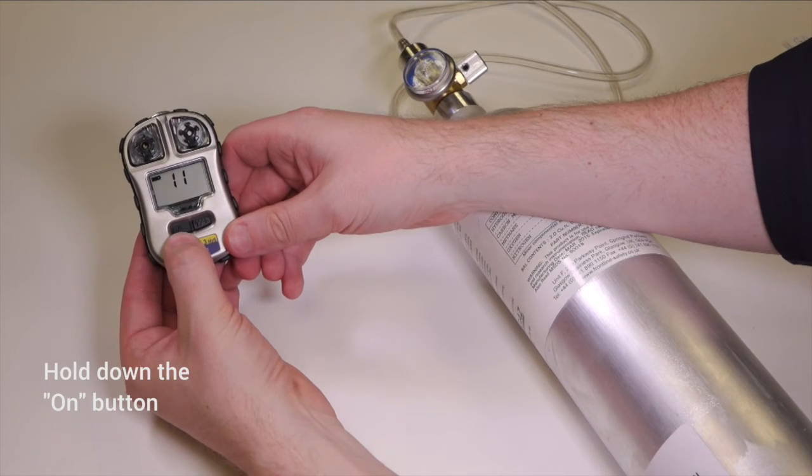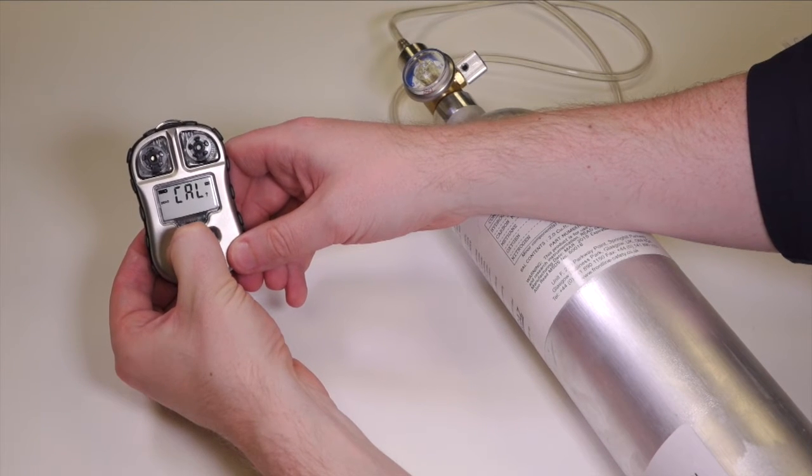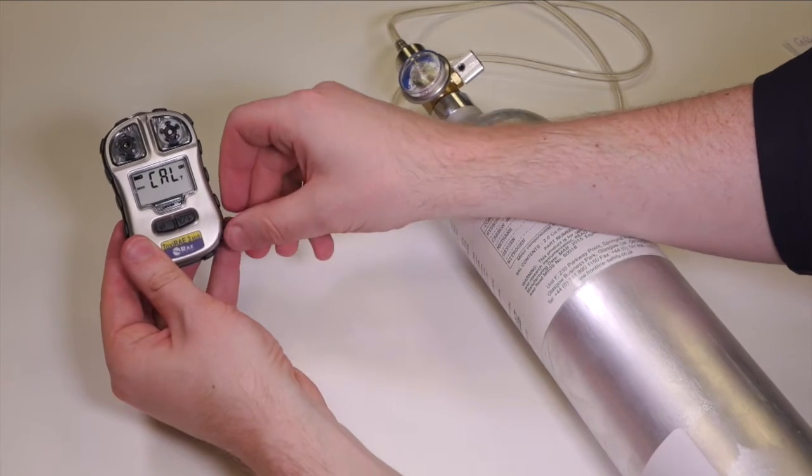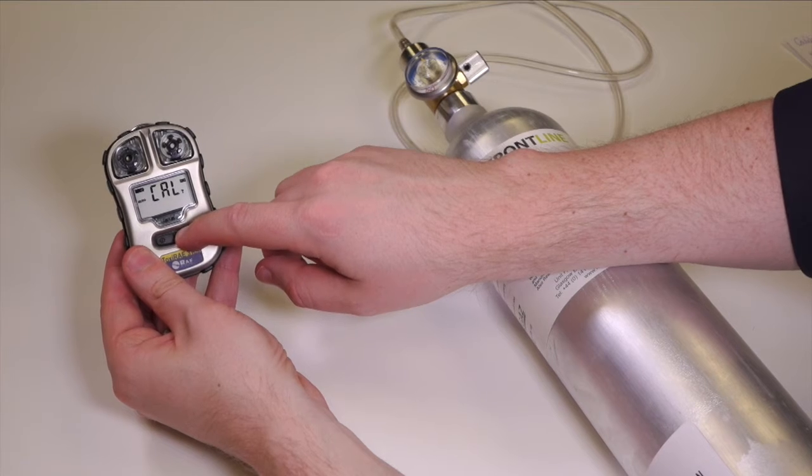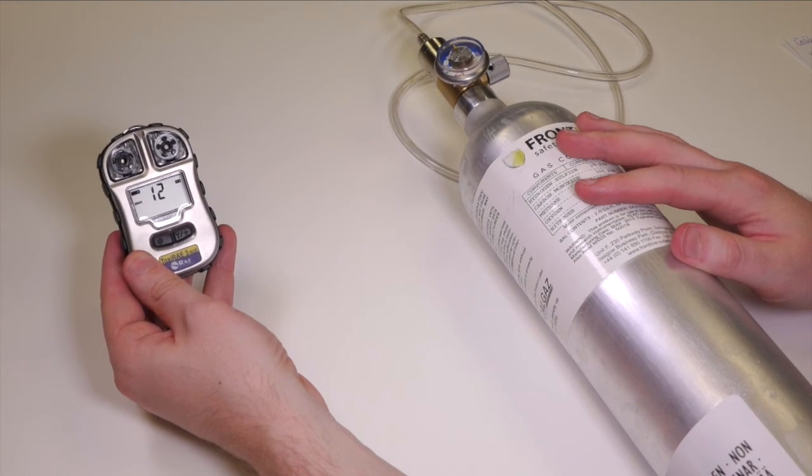Hold down what is the on key or the left hand key and that's now asking us if we want to perform a zero cal. So we'll say yes to that. That's going to zero the sensors, make sure you're in fresh air before you do that and that takes 15 seconds as you can see.